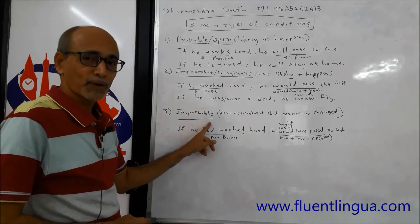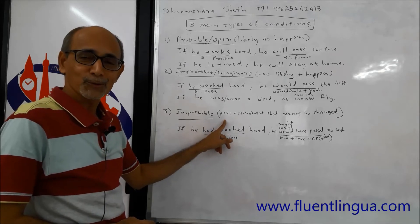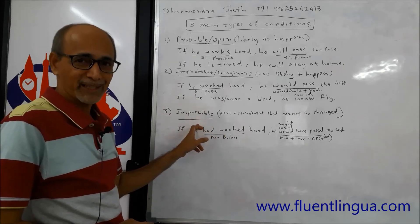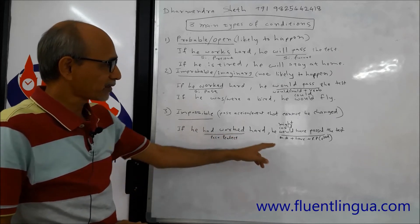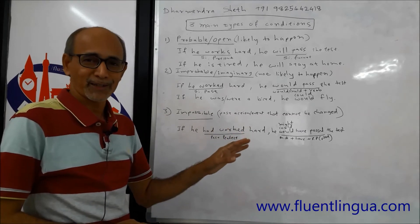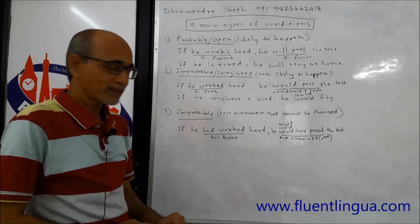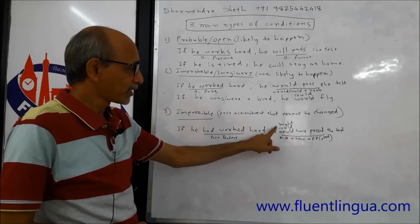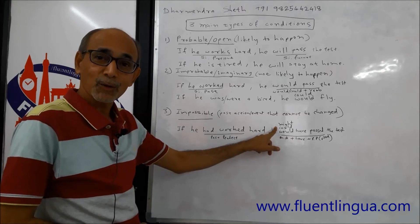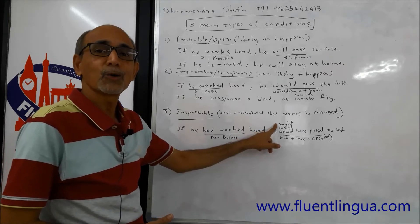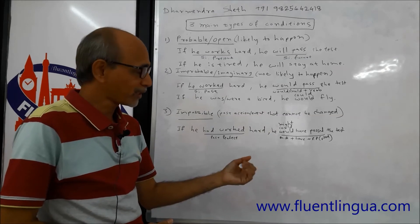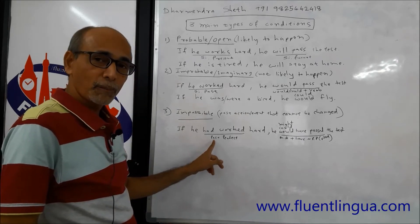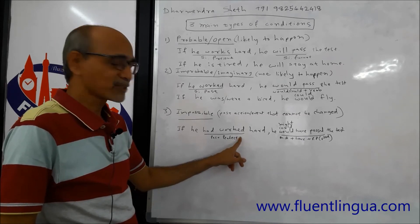The third type is the Impossible type. What we have done in the past, we cannot change — so this is called the Impossible type. It is a Past Time condition. We say: if he had worked hard, he would have passed the test. The condition is in the past perfect tense — had plus past participle, the third form of the verb.